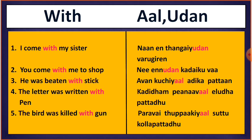In this video we are going to learn an important word — 'with' — and its usage in Tamil as 'aal' and 'udaan'. First let us see the usage of 'udaan' in Tamil. Normally we use the word 'udaan' whenever someone is accompanying you or whenever you are going with someone — when someone is coming with you or going with someone.